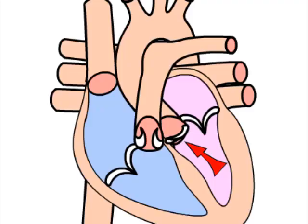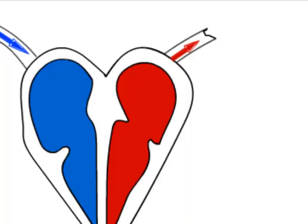Afterload, also known as the systemic vascular resistance (SVR), is the amount of resistance the heart must overcome to open the aortic valve and push the blood volume out into the systemic circulation. Afterload refers to the stress or tension generated by the left ventricular wall during ejection of blood. When afterload decreases, it allows more blood to leave the chamber, meaning that with an increase in afterload, stroke volume will decrease, and vice versa.